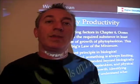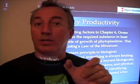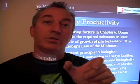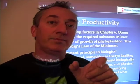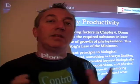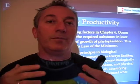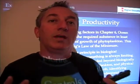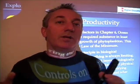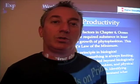Liebig's Law of the Minimum tells us that the single factor needed by an organism, but supplied in the smallest amounts or at the least rate, is the one that's going to control the growth of that organism. This concept, though it came from agriculture, has really expanded our way of looking at the ocean and trying to figure out what controls primary production in the world ocean.